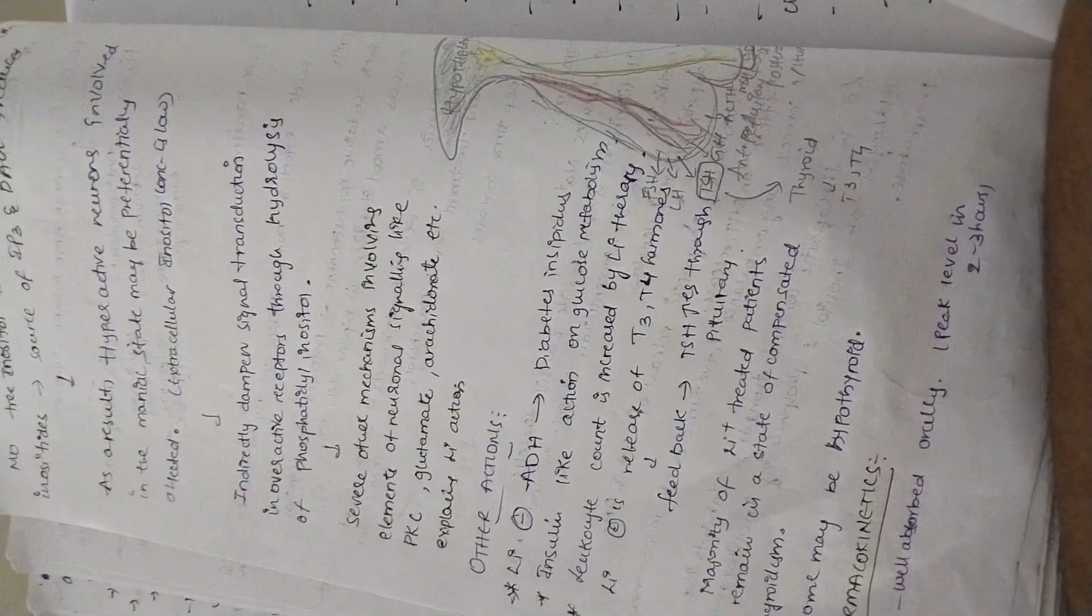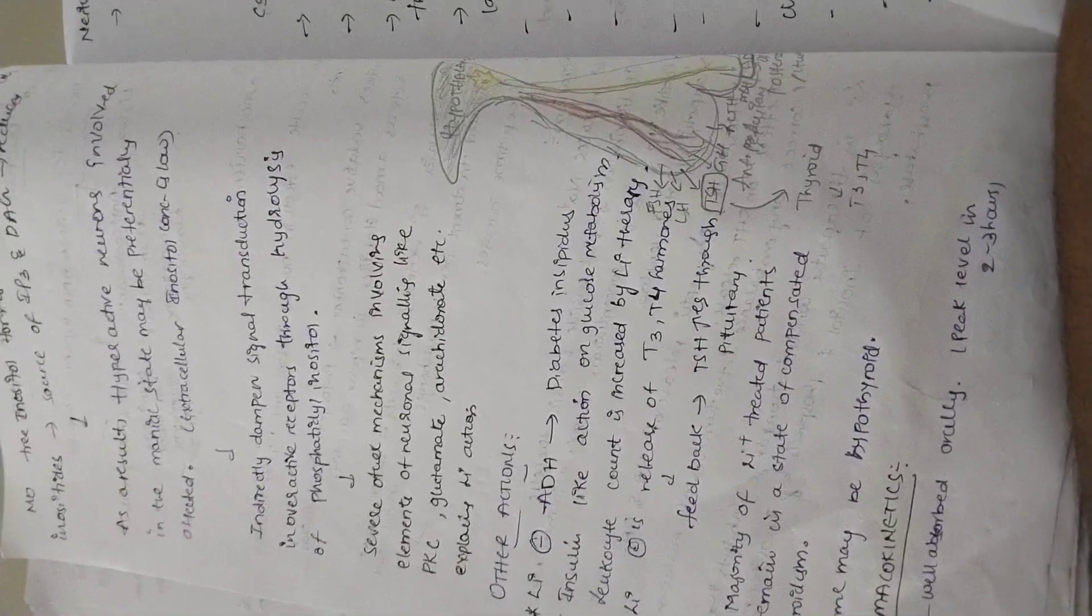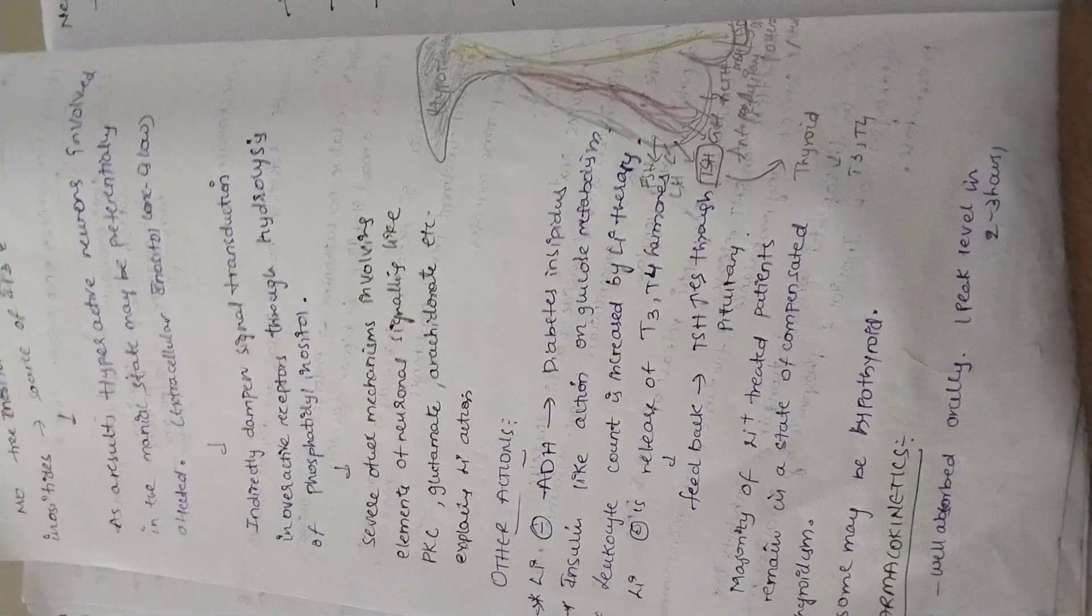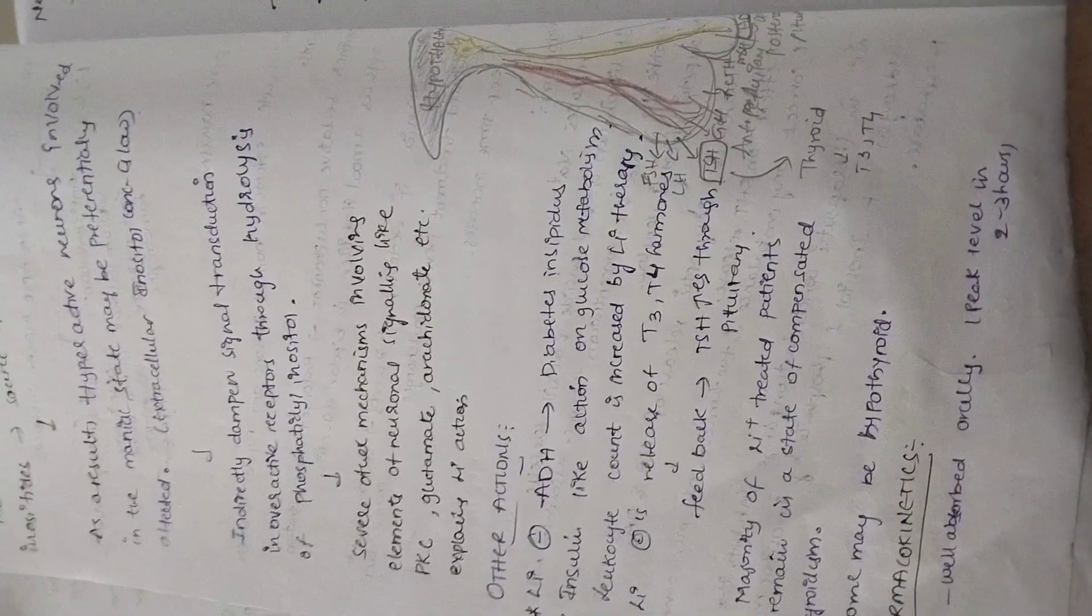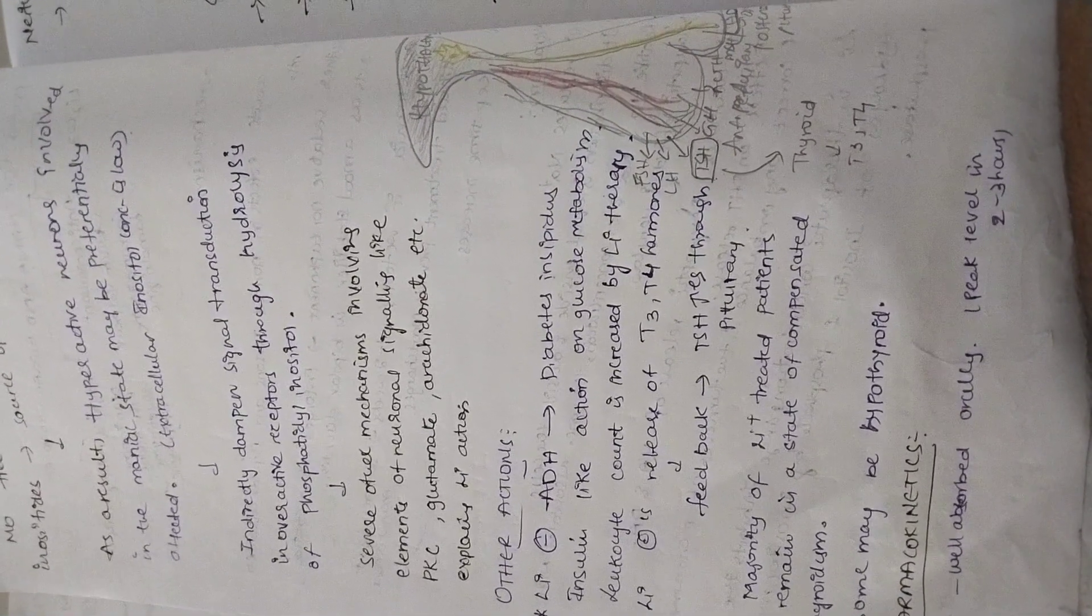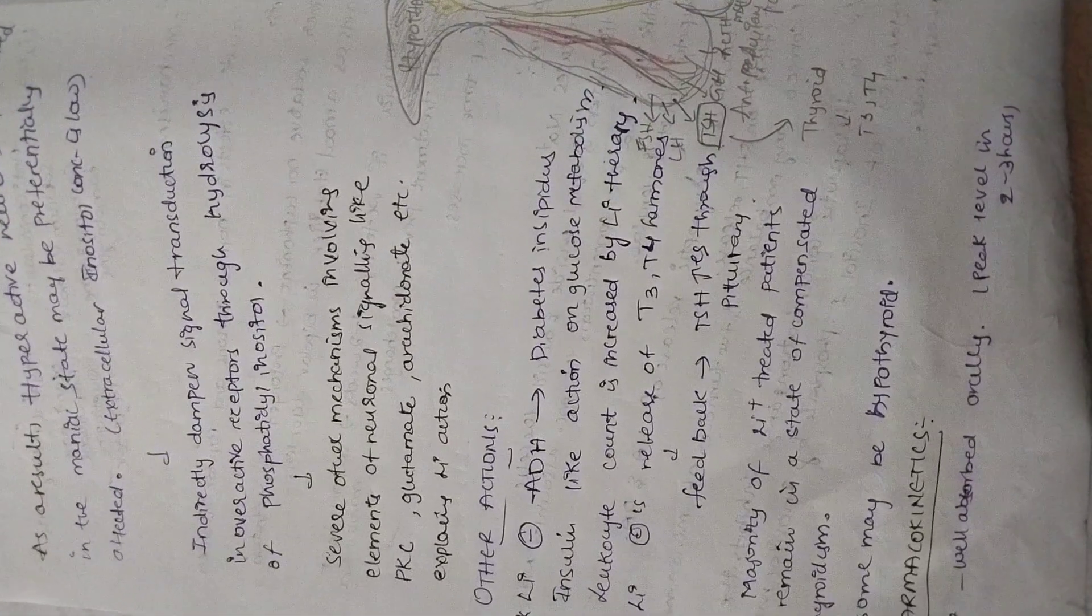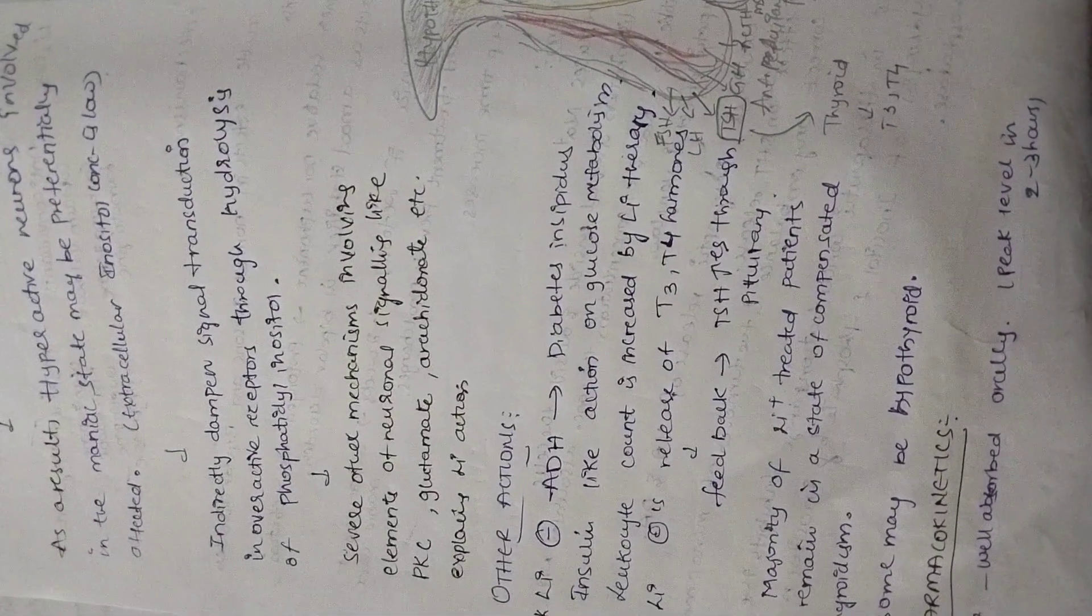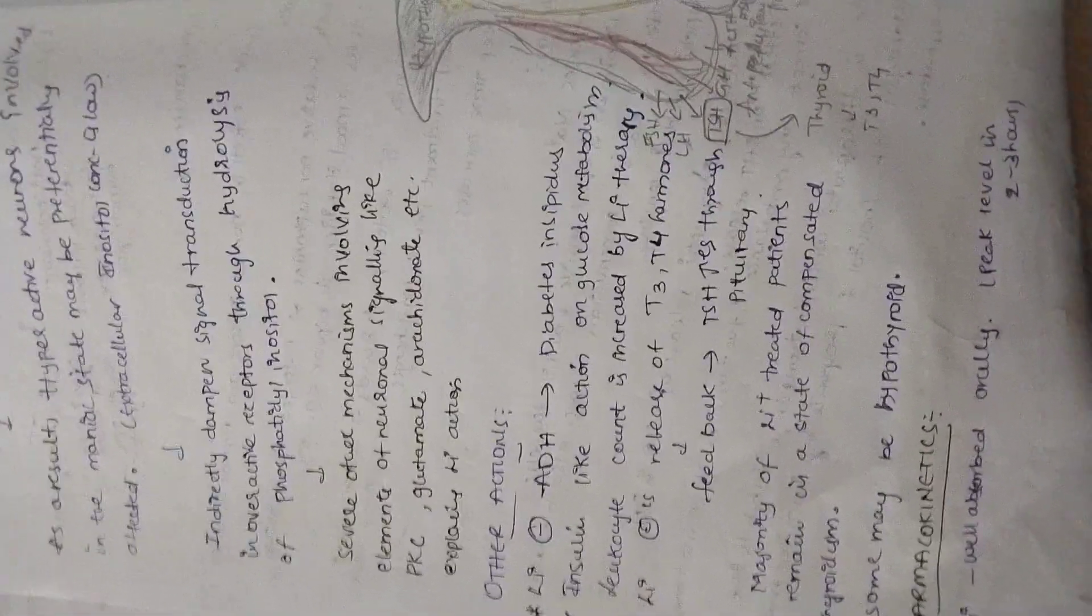Extracellular source of inositol is also very less. Normal neurons cannot be affected but hyperactive neurons will get affected and signal transduction will be decreased in hyperactive neurons due to this ineffective hydrolysis of phosphatidyl inositol. Lithium also involves in other mechanisms like protein kinase C, glutamate, and arachidonate mechanisms.